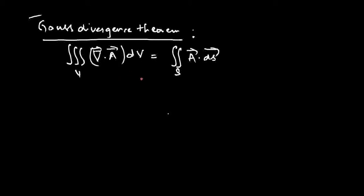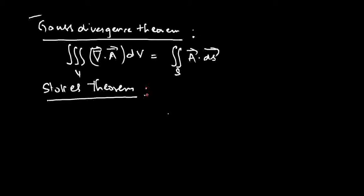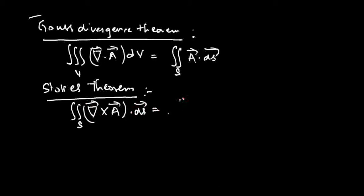Similar to the Gauss-Divergence theorem, there is Stokes' theorem. Stokes' theorem relates the line integral to the surface integral and vice versa. It states that the surface integral of the curl of the vector field A-bar (del cross A) is equal to the line integral of the vector field A-bar taken along the closed periphery or contour of the surface.